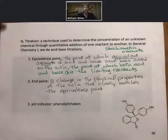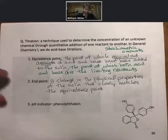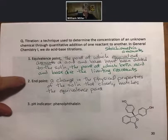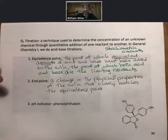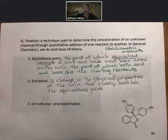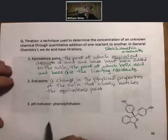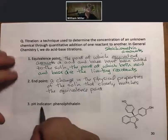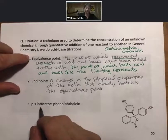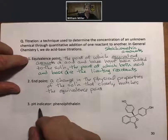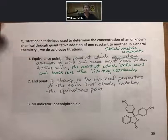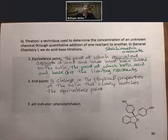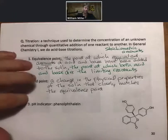There's actually an art and a science to picking an end point that does closely match the equivalence point. For acid-base titrations done in this course, the best pH indicator, or the best indicator of the equivalence point, when acid and base have been added together in equal amounts, is going to be phenolphthalein.